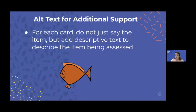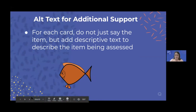Another very useful feature is adding alternative text for additional support. Especially if you have a picture, not just writing the definition of what you're trying to get at, but adding descriptive alternative text. For example, if I were talking about a fish, I would say 'it's orange, it lives in the ocean, and it likes to swim.' If students can't see the picture for some reason, or they just want to hear the audio, they know what the picture is. You can add alternative text either to read or to speak, however you want to do it.